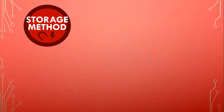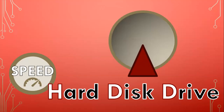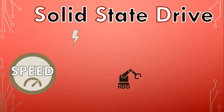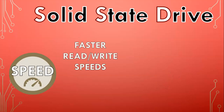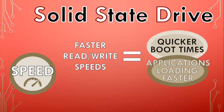The storage method is the reason for each device's speed difference. Hard drives have platters that are physically spinning and a physically moving arm — these moving parts all take time, while the electronic circuits of the solid state drive are far quicker. Think about how fast it would take to send an electronic signal from one place to another compared to a physically moving part. SSDs provide faster read-write speeds, resulting in quicker boot times and applications loading faster.